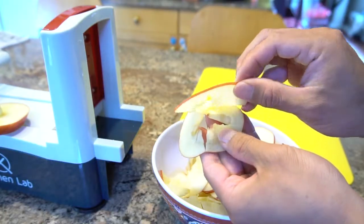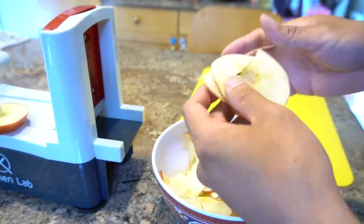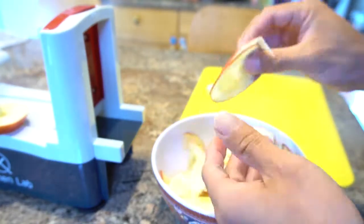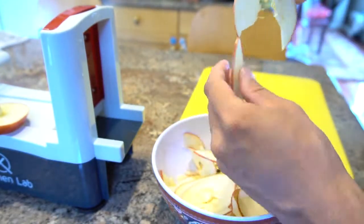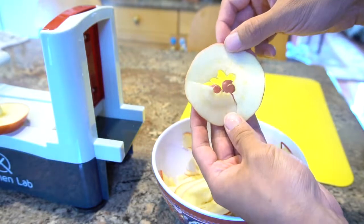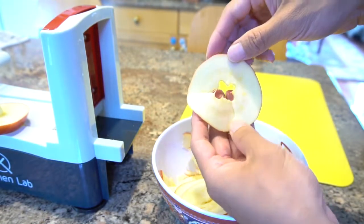The apple didn't exactly stay in one complete ribbon, and pieces of it broke off into rings on their own. The slices are thin, but not all of them are uniform, which is due to uneven pressure applied when pressing the fruit into the blade.